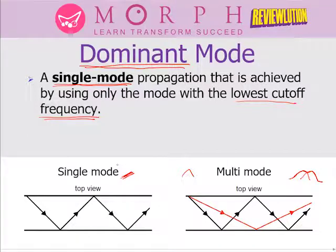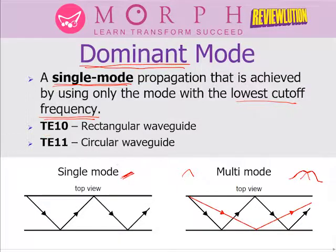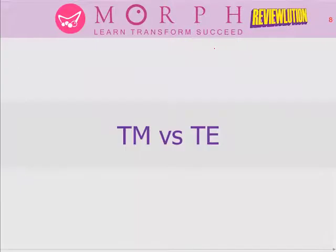For dominant mode standards: rectangular waveguides have a dominant mode of TE10, whereas circular waveguides have a dominant mode of TE11. Let's now look at transverse electric (TE) and transverse magnetic (TM) modes of operation.